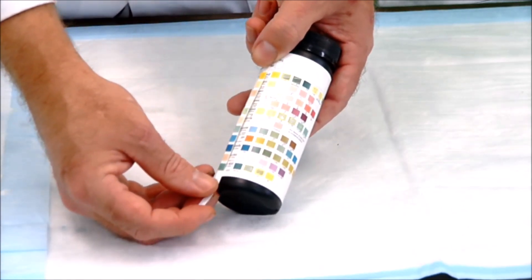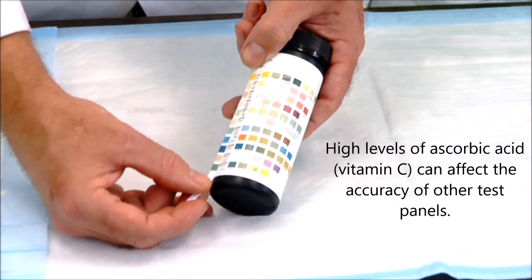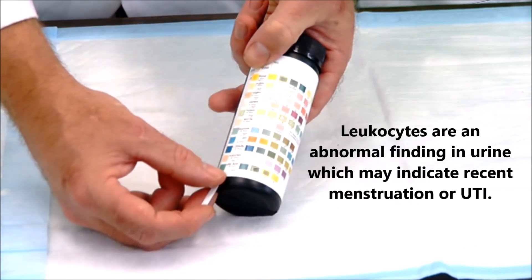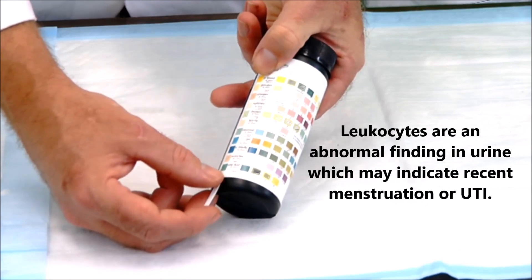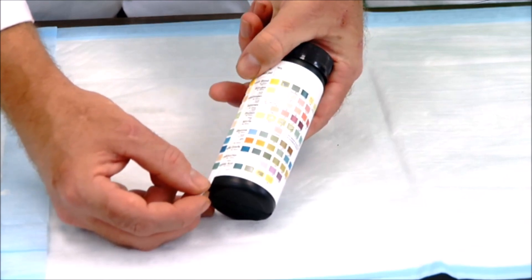So first, let's go from the bottom. You can see that ascorbic acid looks like I have a 10 there, so I'll mark that down. Next is leukocytes. This would be abnormal to have in urine, but it sometimes happens in females or people with urinary tract infections. You can see that I might have a trace of leukocytes in this urine. This is actually synthetic urine, by the way.